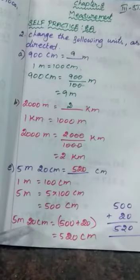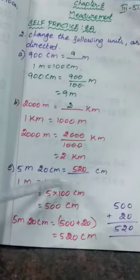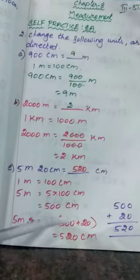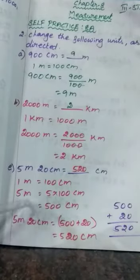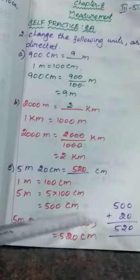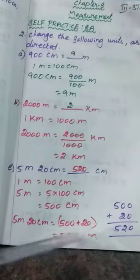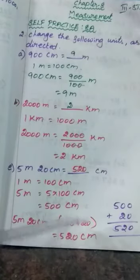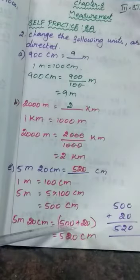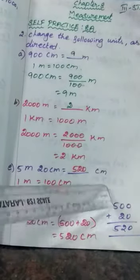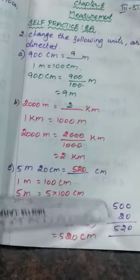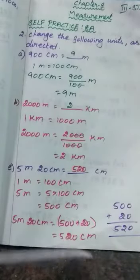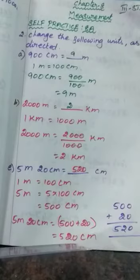So 5 meter 20 centimeter — first write the question: 5 meter 20 centimeter. Instead of 5 meter, how many centimeters did you find? 500 centimeter. So 5 meter is converted into 500 centimeter. Write 500 centimeter instead of 5 meter. In your question, 20 is already given. So you have to add 20 with 500. In the rough column, add: 500 plus 20 equals 520. So your answer is 520 centimeter.